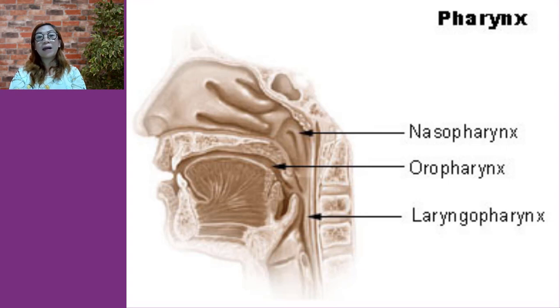The pharyngeal, palatine, and lingual tonsils are located in the pharynx, and they are also called Waldeyer's ring.